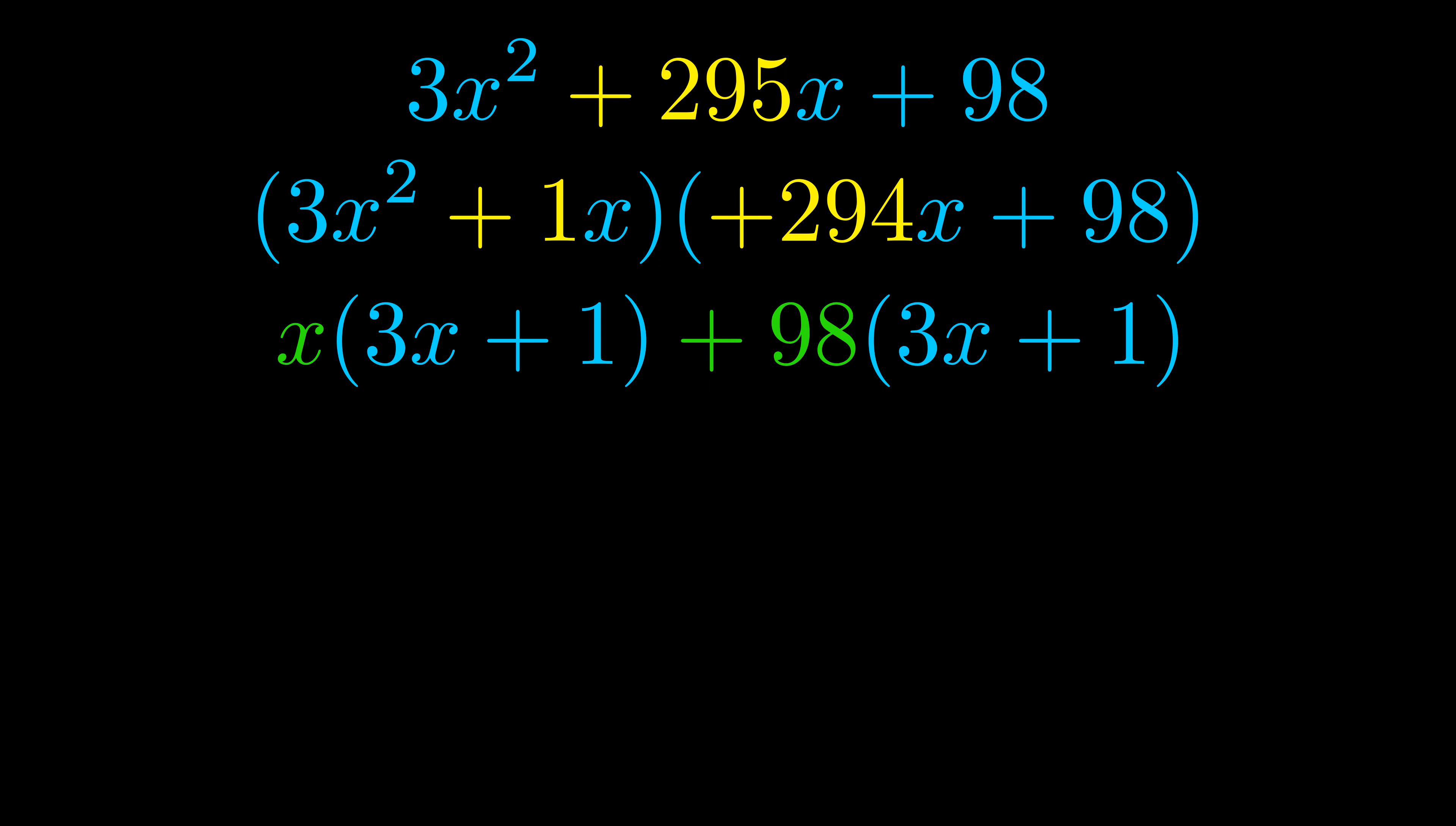Notice also how what remains inside of the parentheses is the same in both cases. The blue values are the same. Those blue values will become one of our factors and we will combine the two green values, the GCFs that we pulled out, to get the other one. And that is our fully factored equation.